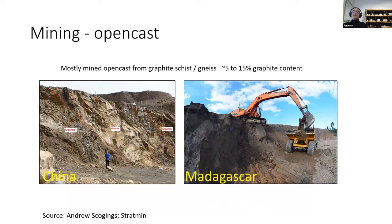Graphite may be mined open pit, typically at grades between 5 and 15 percent graphite content. The picture on the left is from northeastern China, near the Russian/North Korea border, which is the main producing area in China — graphite in granite in an open pit. On the right is deeply weathered saprolite in Madagascar.